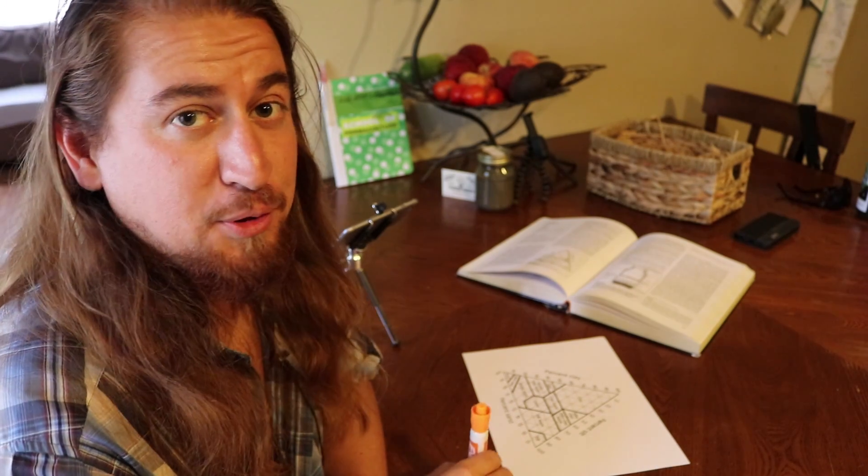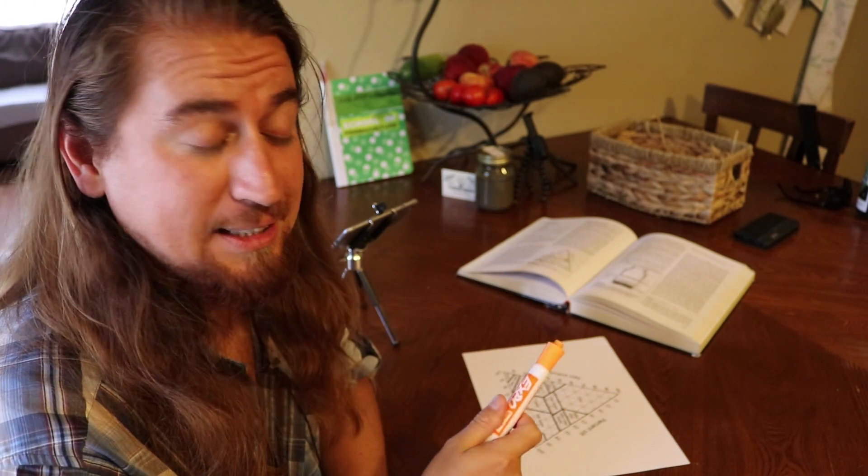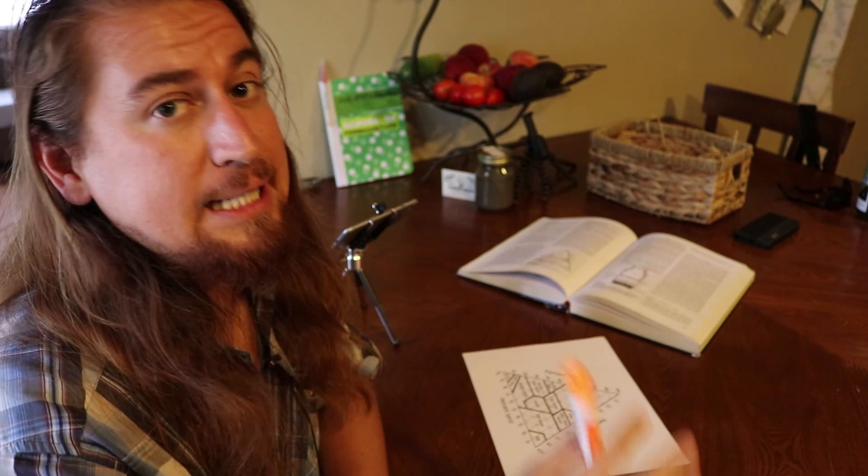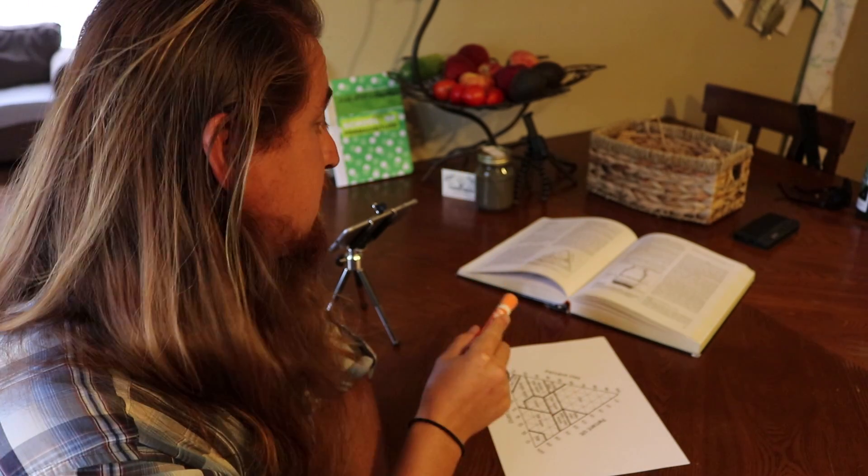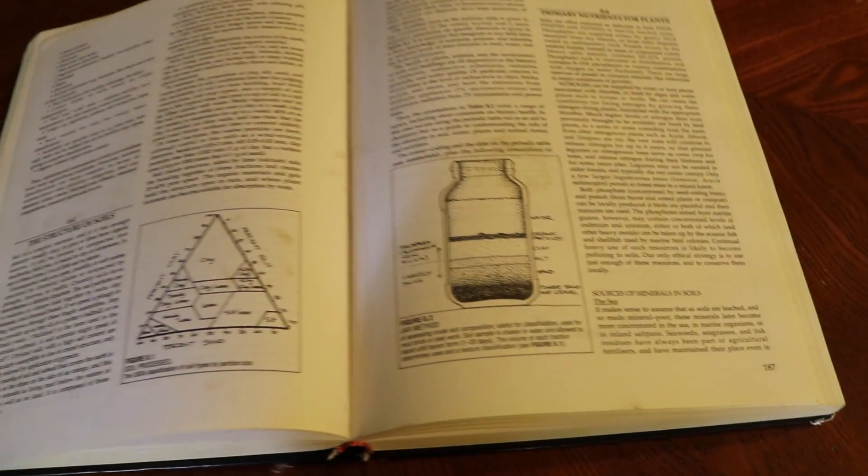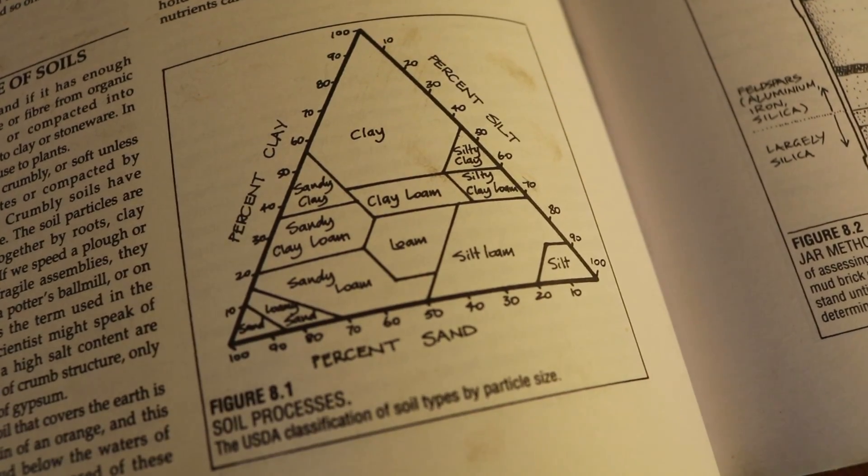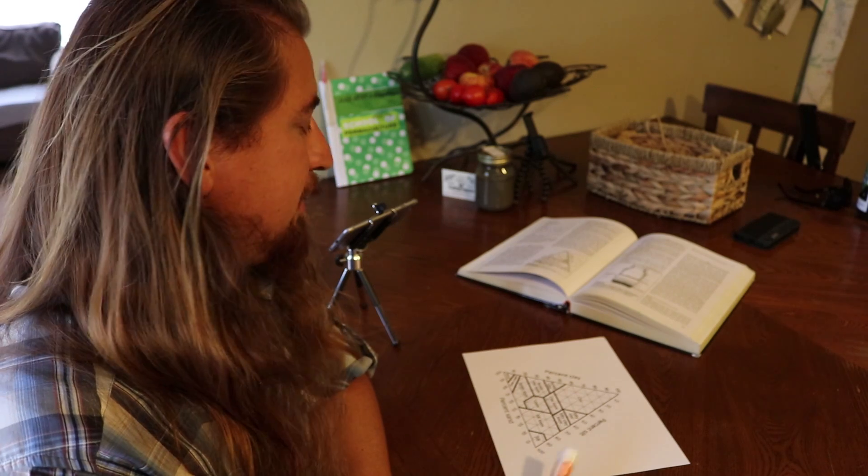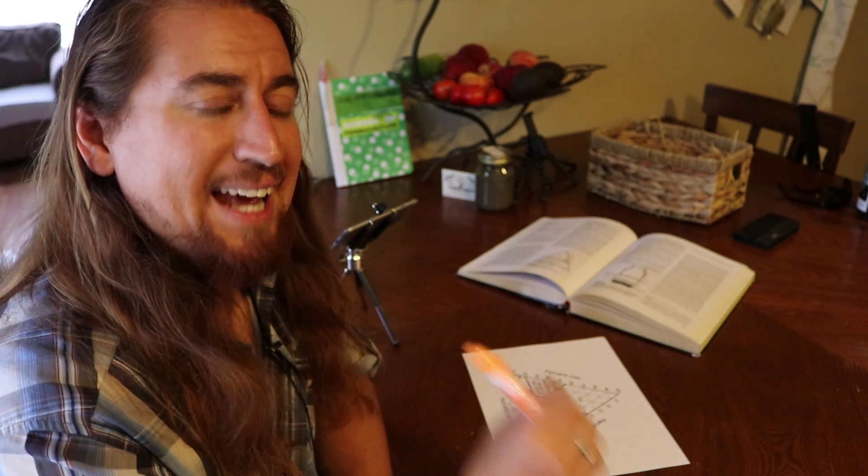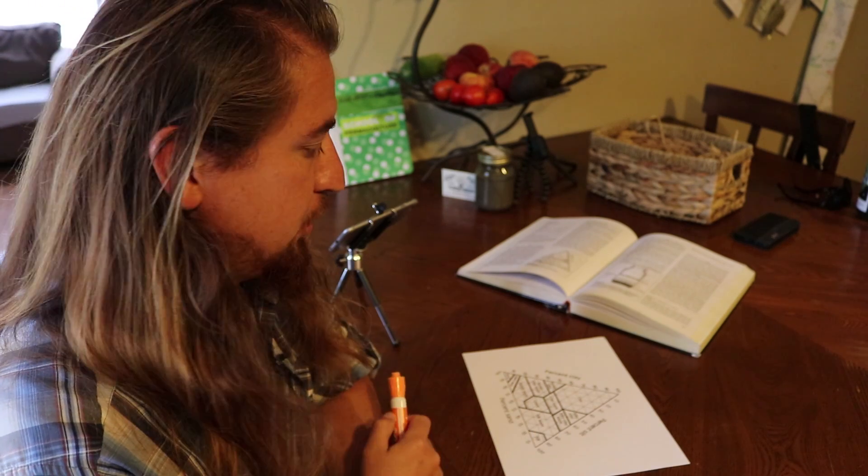When you take a permaculture design course and go through the soils class, you learn a ridiculous amount of information. Then you do your own study and get back to the permaculture designer's manual, flip to page 186, and you have this amazing, super complicated looking graph. That is the USDA's soil texture triangle.